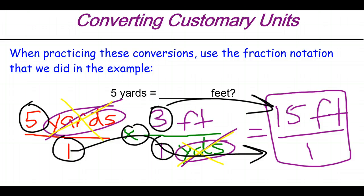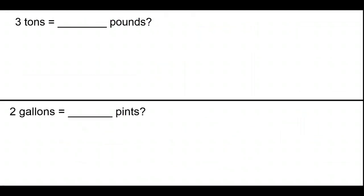There are two slides of practice problems — four total problems. Don't stop the video after the first set because there's another one. Here are the first two: 3 tons is the same as how many pounds, and 2 gallons is the same as how many pints? Go ahead, pause the video, work through both using the fraction notation. You can use your own instinct to double-check that your answer makes sense — think about which unit is bigger. Come back and we'll look at the answers, then go on to the final two problems.